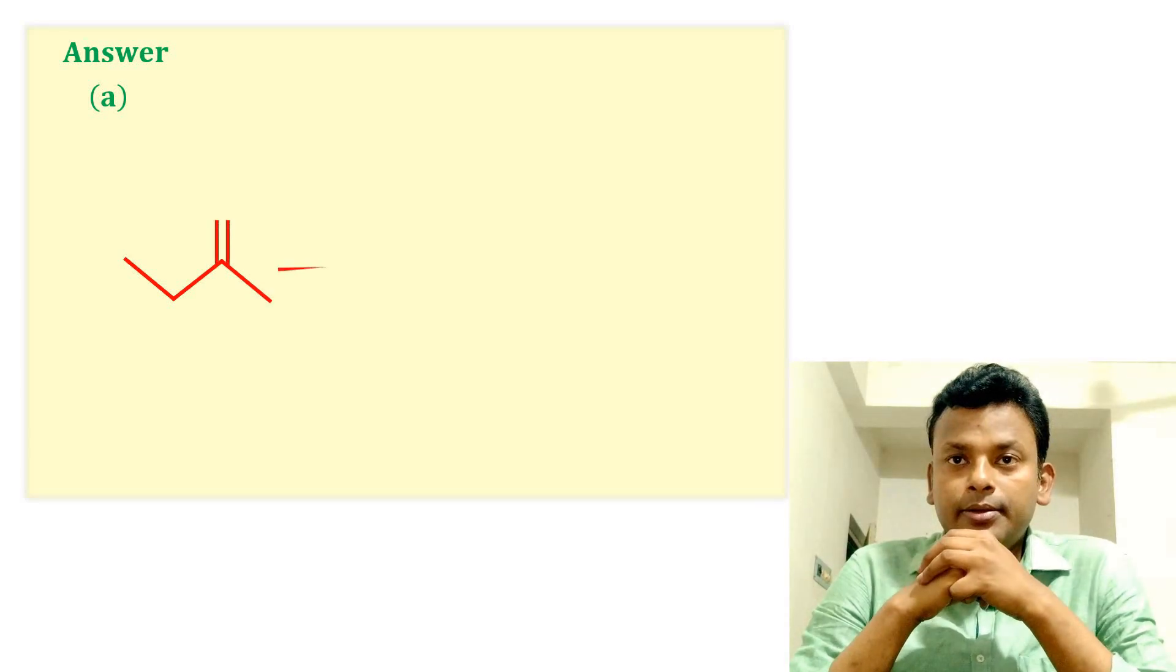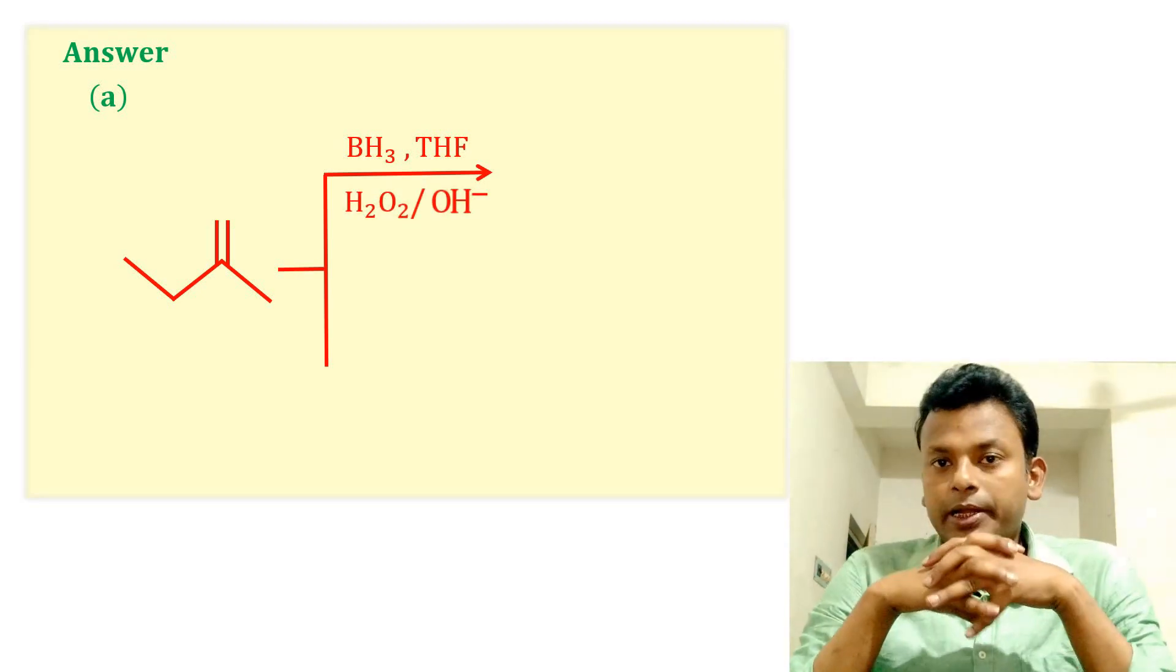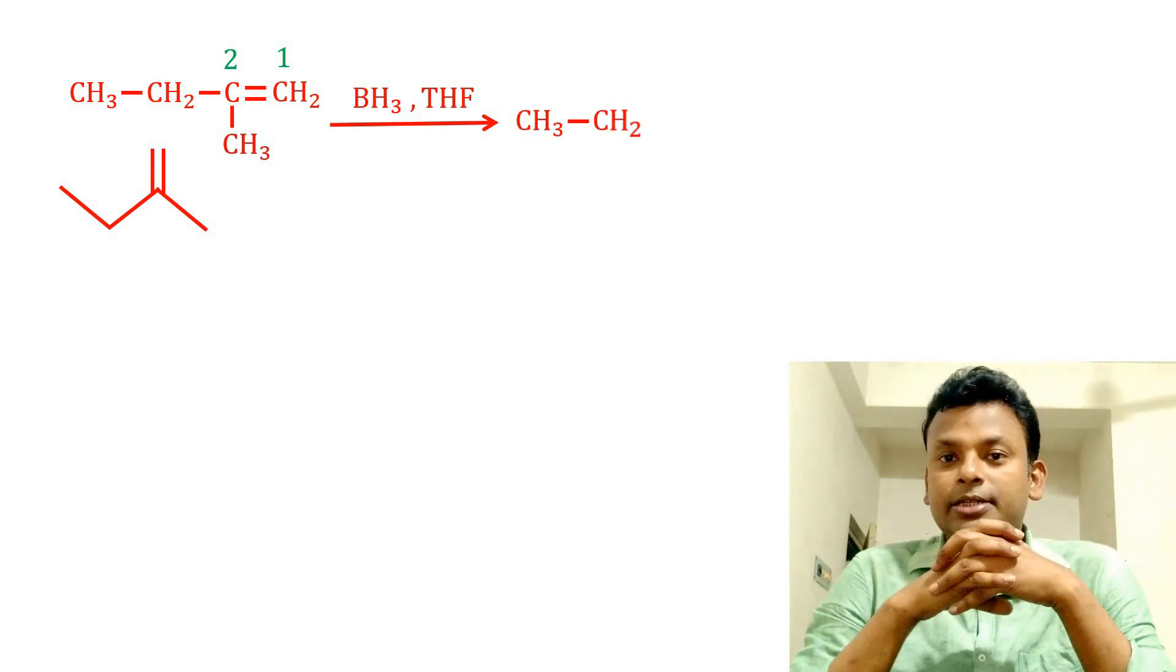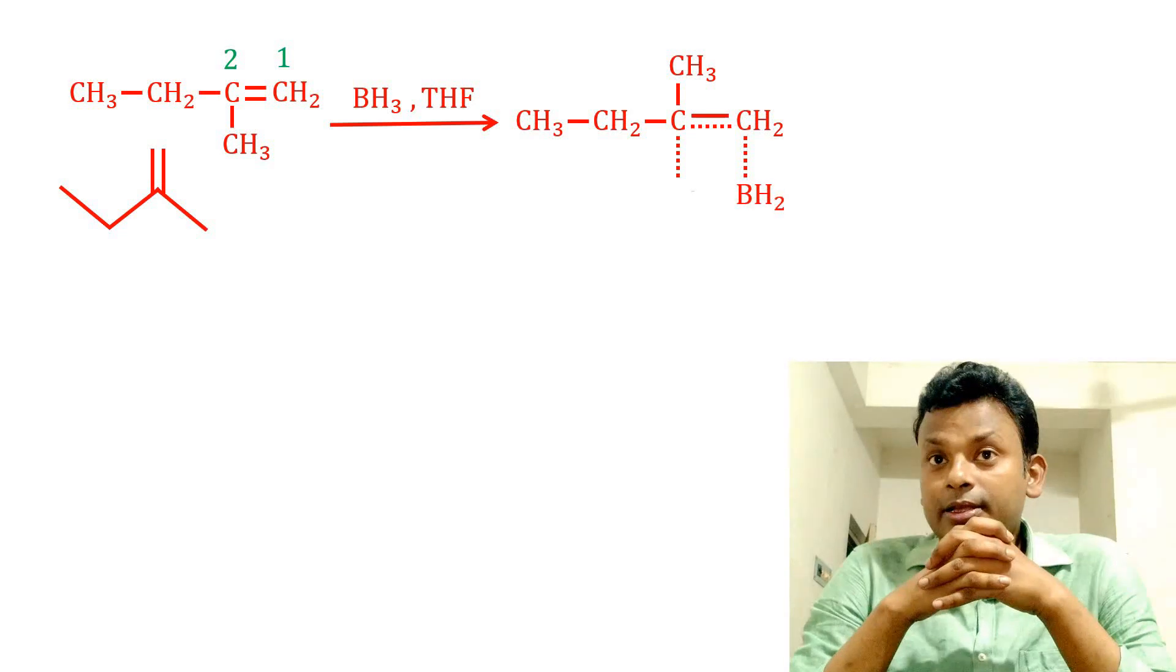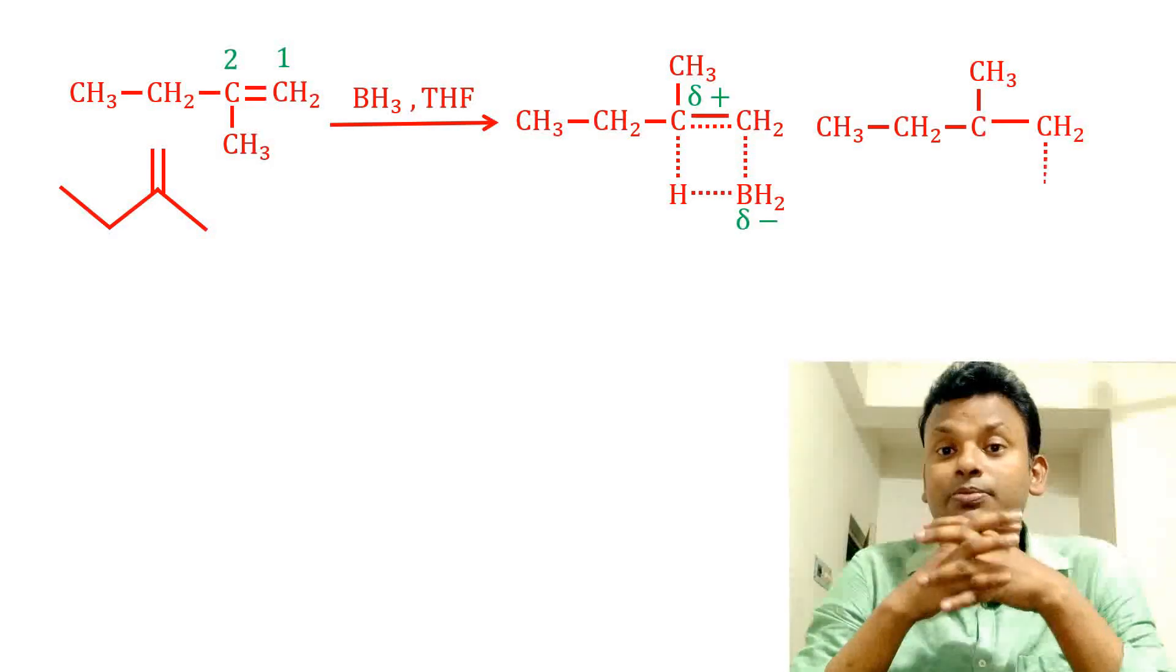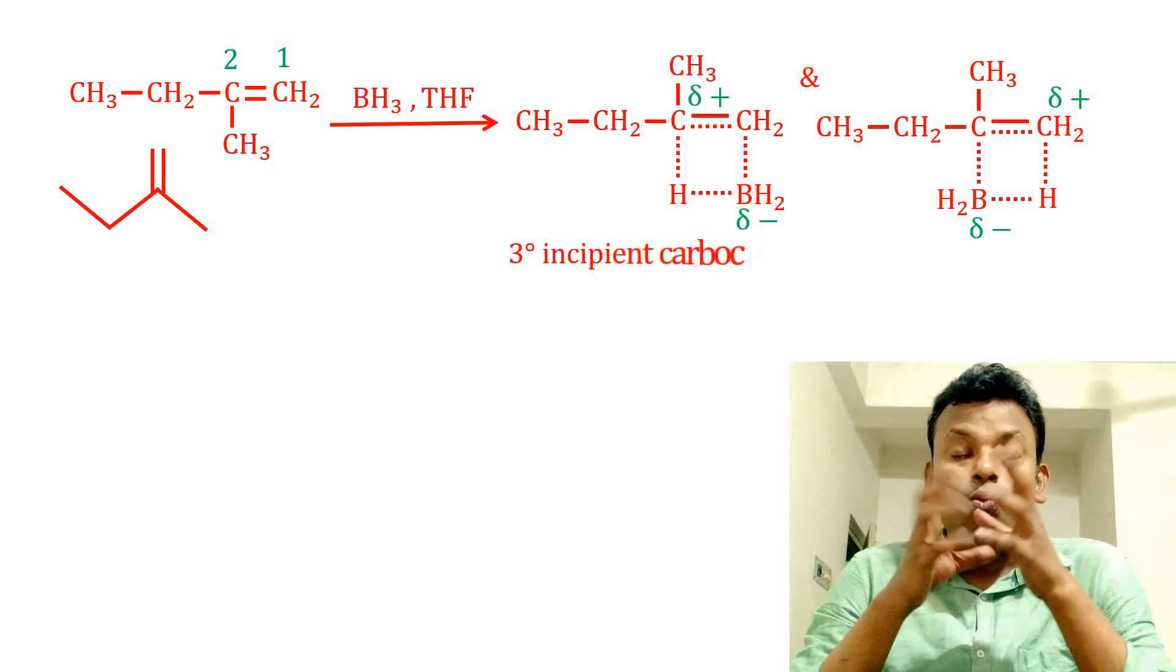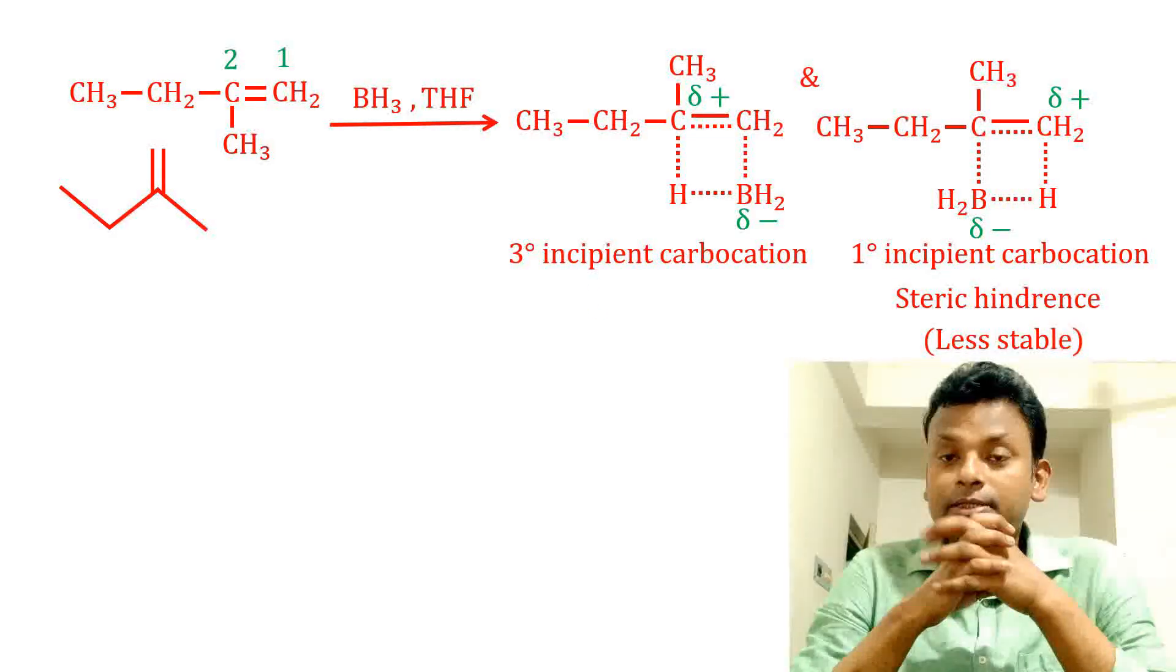This is the alkene. First, it reacts with BH3 in THF, then H2O2 and OH minus. Now, explain with mechanism. This is the compound. First, it reacts with BH3 in THF, and two types of transition states are formed. Two types of four-member cyclic transition states are formed. First, BH3 reacts with number 1 carbon, giving this four-member cyclic transition state. And second, BH3 reacts with number 2 carbon, giving this four-member cyclic transition state. Now we will identify which cyclic transition state is more stable. This is the 3-degree incipient carbocation, and this is the 1-degree incipient carbocation. Here I have steric hindrance, so it is less stable. And here I have no steric hindrance, so it is more stable.